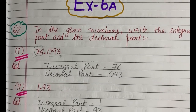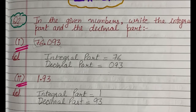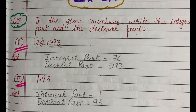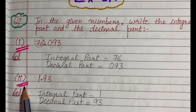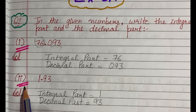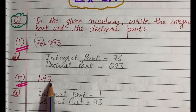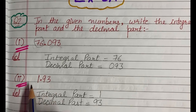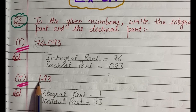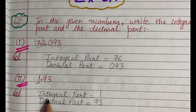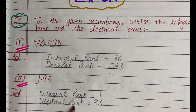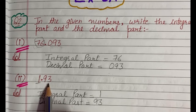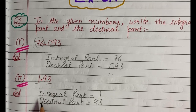The second part of the same question says 1.93. Here the integral part will be equal to 1 and the decimal part will be equal to 93. Hopefully it is clear to you.